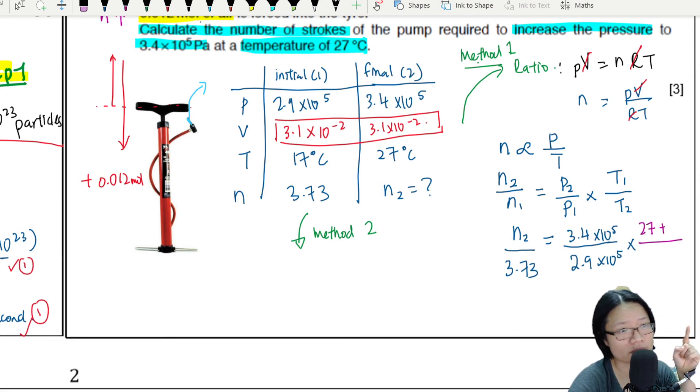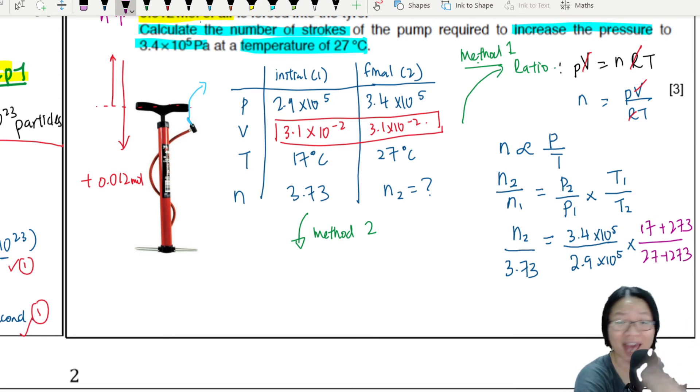Because if you don't convert, on this side you will have 27 plus - oh no, this is 17, my bad - initial temperature 17 plus 273, and here is 27 plus 273. And woe be you if you cancel off the 273. They ain't equal. You can't cancel plus minus. Okay, okay, don't lose that mark.